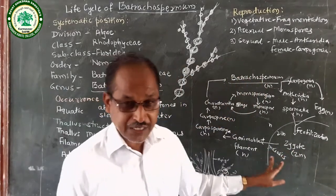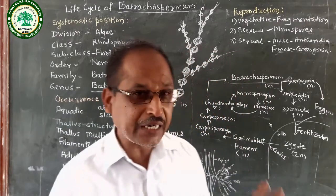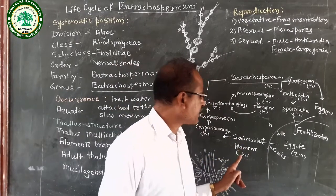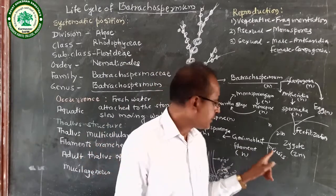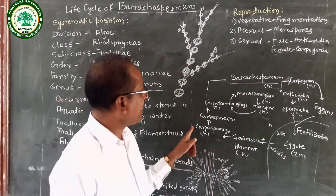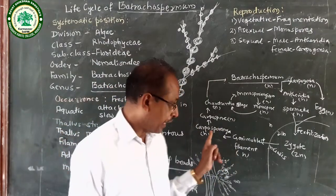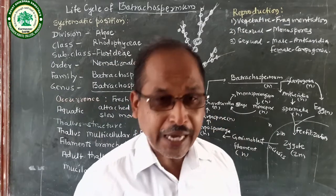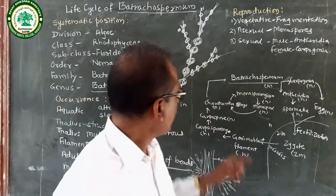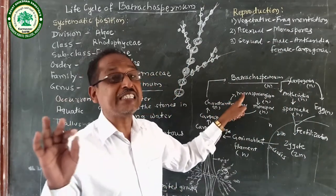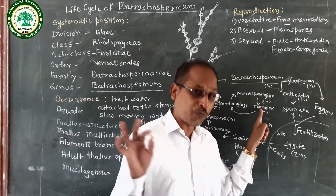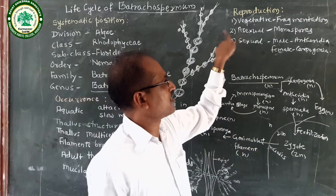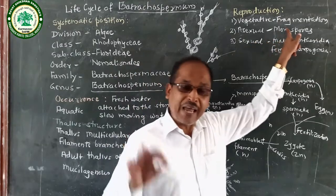In the zygote, meiosis — also called reduction division — takes place, and it forms a gonimoblast filament. That gonimoblast filament is diploid due to meiosis. The gonimoblast filament forms Carposporangia, and in Carposporangia, carpospores are present. The carpospore develops into a Chantransia stage. The Chantransia stage produces monosporangia, in which monospores are present. The monospore develops into a new individual, as we already studied in our asexual reproduction.